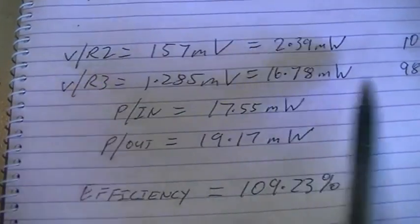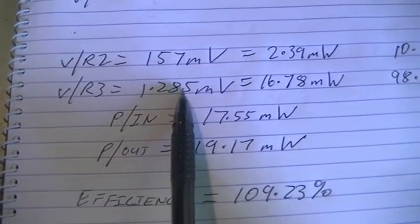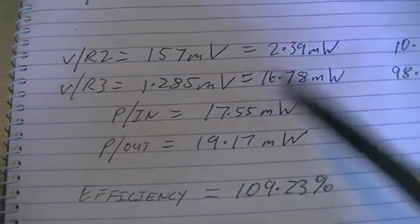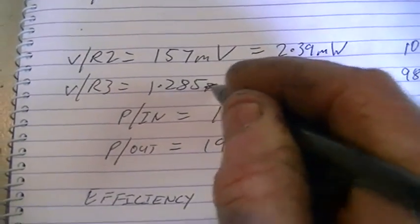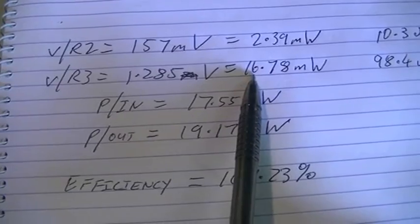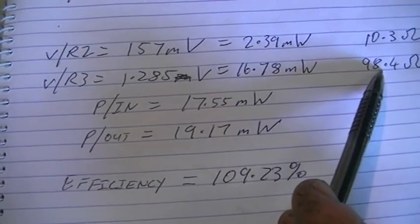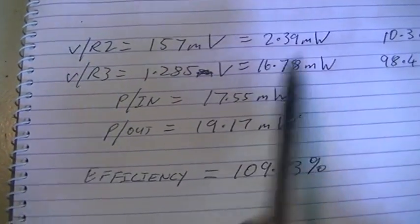R3, which is 98.4 ohms, had 1.285 volts - not millivolts, volts - which gave us 16.78 mW being dissipated across that resistor, R3.